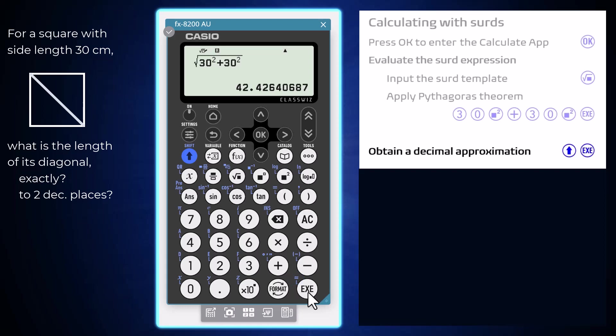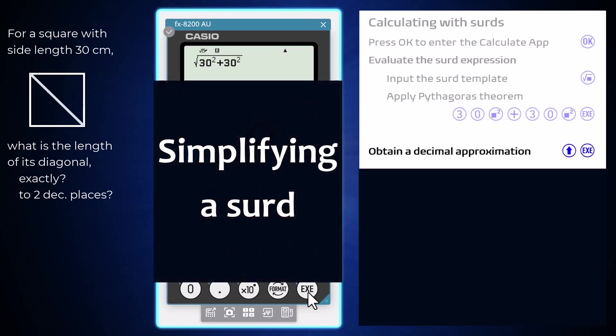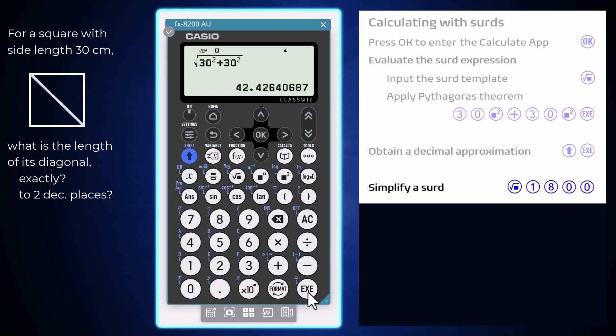Using a little mental computation, it seems that this length is also equal to the square root of 1800. To check that this is true, enter the square root of 1800 and see if it simplifies to 30 root 2.